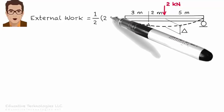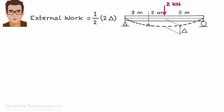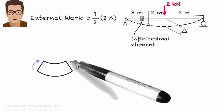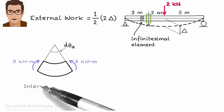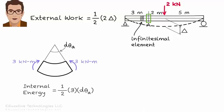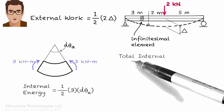The work done by the external load is propagated through the structure and stored in the elements as internal energy. The energy stored in each element equals one half its deformation times its internal force. Let me elaborate. In this beam, external work done is one half two delta. The beam can be viewed as many infinitesimal elements, each having a deformation and subjected to an internal moment. For example, if we take the infinitesimal element located at point A, the internal moment in the beam is 3 kilonewton meters, and d theta A denotes the amount of rotation of A. So the internal energy stored in this element is one half three times d theta A.